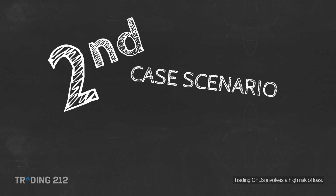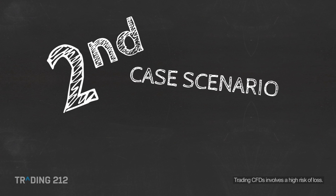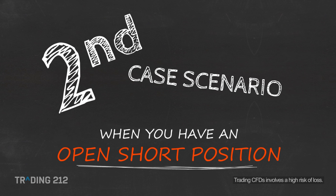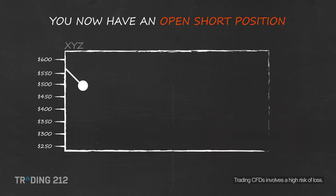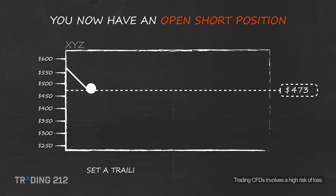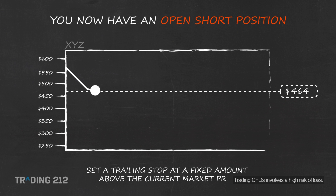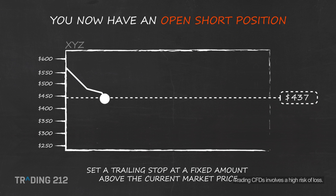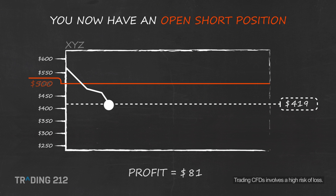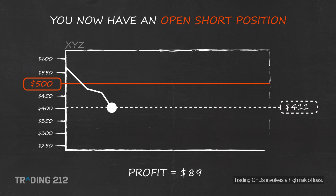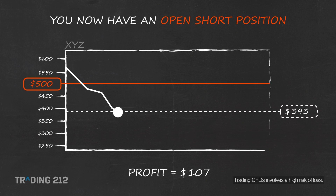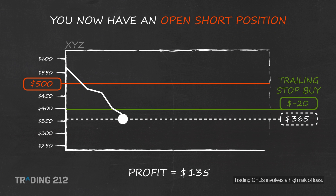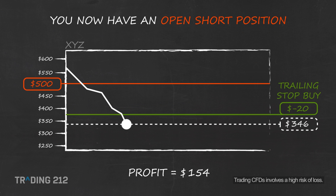Now let's look at the second case scenario: how to set a trailing stop with an open short position. When you have a short position, you set your trailing stop at a fixed amount above the market price. In this case we have sold at $500. When the current price reaches $400, you decide to set a trailing stop that will keep its distance of $20 above the current price.